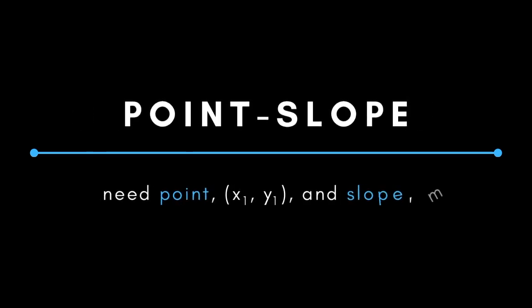To write an equation in point-slope form, you need the point (x₁, y₁) and the slope.